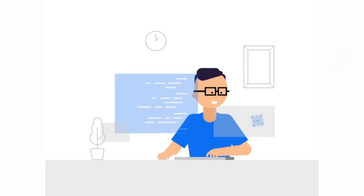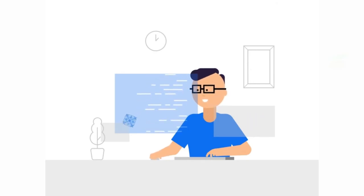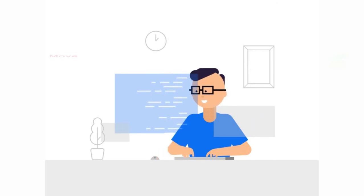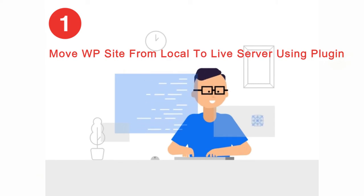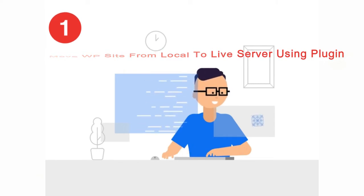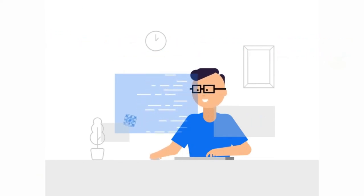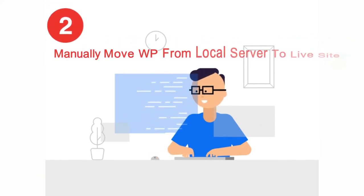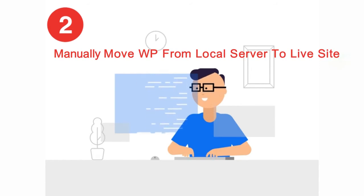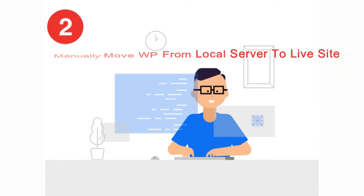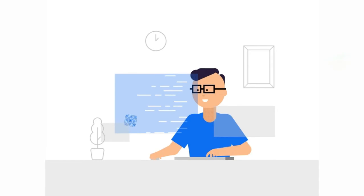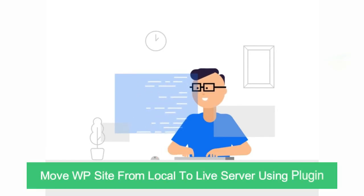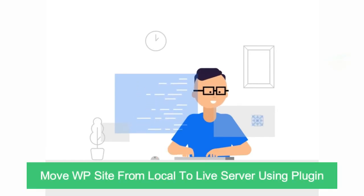Method one is to move WordPress from local server to a live site using a plugin. Method two is to manually move WordPress from local server to a live site. We will choose the easiest and best way to complete this task, and that is method one — move WordPress from local server to live site using a plugin.